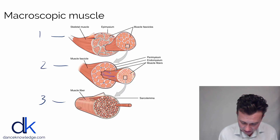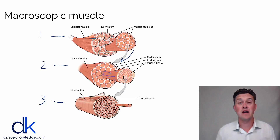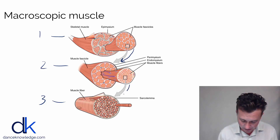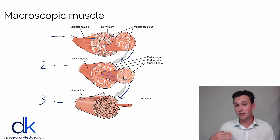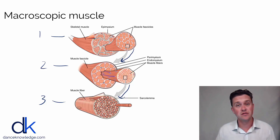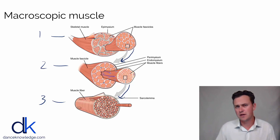You can see that picture two here represents that little box that the gray arrow is coming out of from picture one, and the same applies for picture two going into picture three. So at every level of the macroscopic structure of muscle, you have one big element containing lots and lots of little elements.